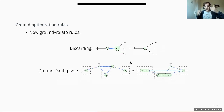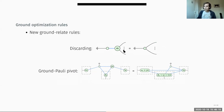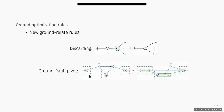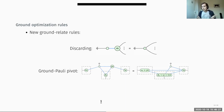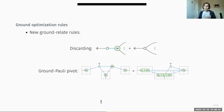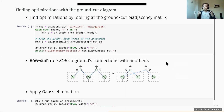We introduce two new rules using the ground rewriting rules to further reduce these diagrams. The first is the discarding rule that lets us absorb spiders connected to grounded spiders with only one neighbor. The other is the ground Pauli pivot, which removes Pauli spiders connected to grounds. Since these two rules also reduce at least one spider of the diagram, we could apply them repeatedly until we find some minima — but in this case we have a better way to find the ground code that matches for the rules.